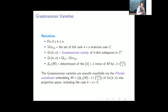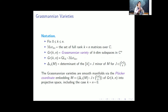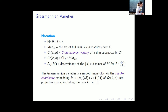Grassmannian varieties are always smooth — they're actually manifolds with lots of nice properties. For the Plücker coordinate embedding: if you multiply on the left by some invertible matrix, you just rescale all determinants by its determinant. So as a homogeneous coordinate, this makes sense on the level of Grassmannian variety points. Here's a 2×6 matrix example: I wrote down every 2×2 determinant. You get zeros in the beginning because of the two zeros in the first column, then 3 times 1 and so on.